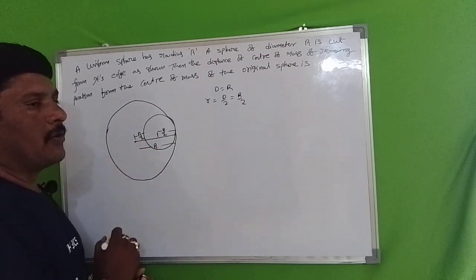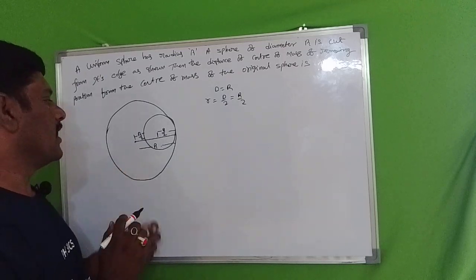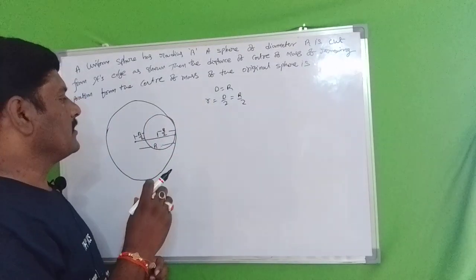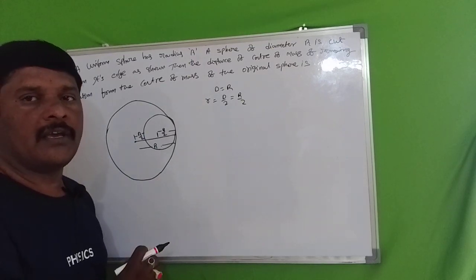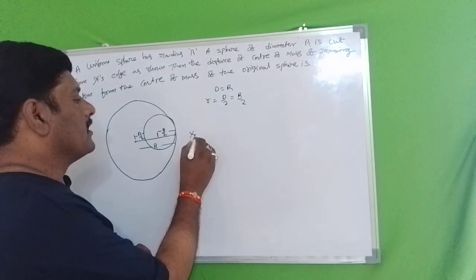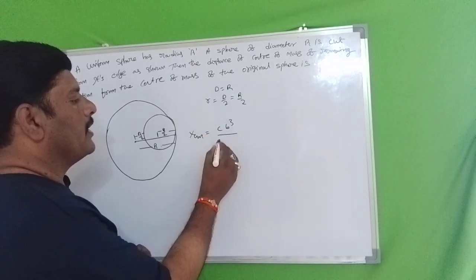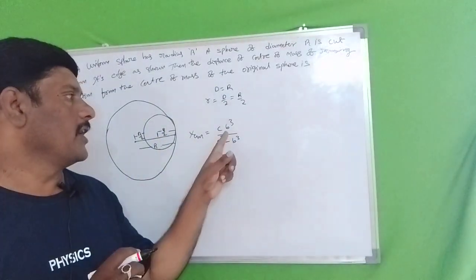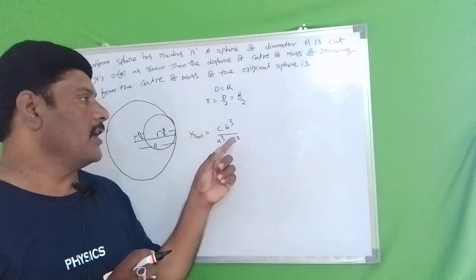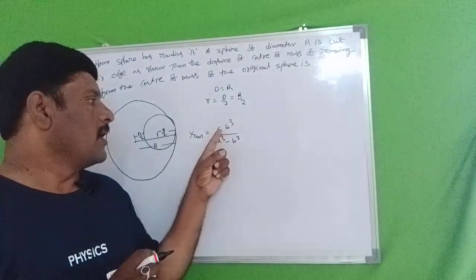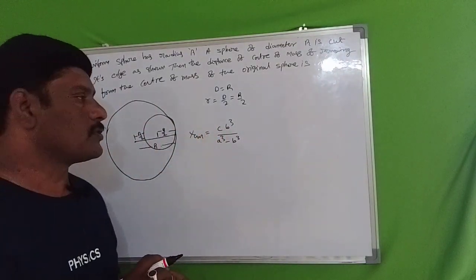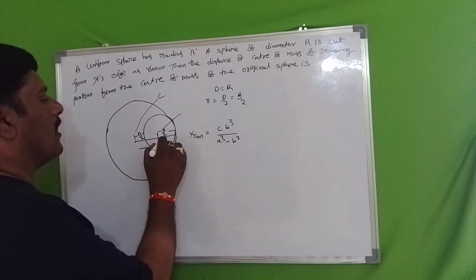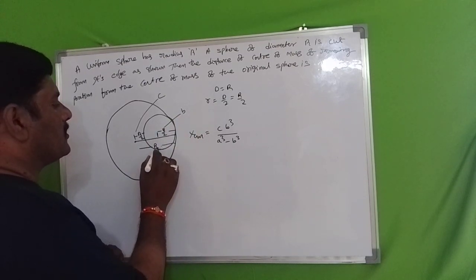The cut portion's center is at distance R/2 from the original center — that is, half the radius of the cut sphere (R/2). Using the shortcut formula: XCM equals C times B³ divided by (A³ minus B³). Here, the volume uses cube terms for spheres. C is the distance indicator, B is the radius of the cut portion, and A is the original radius.